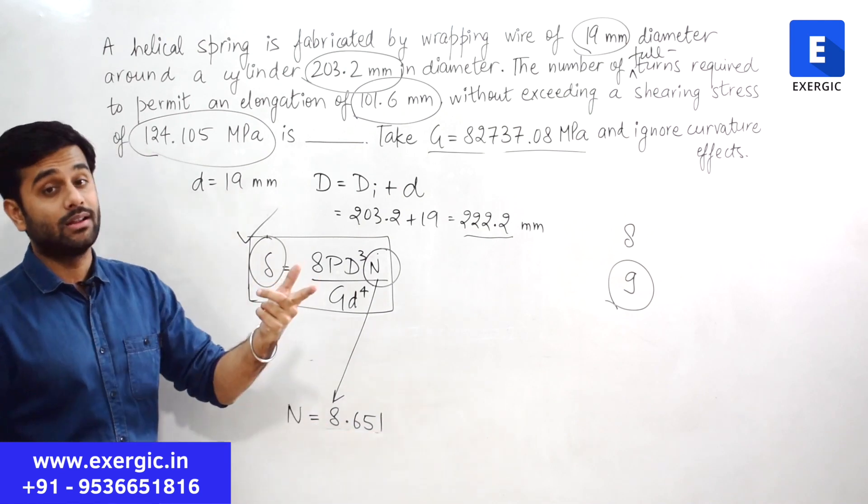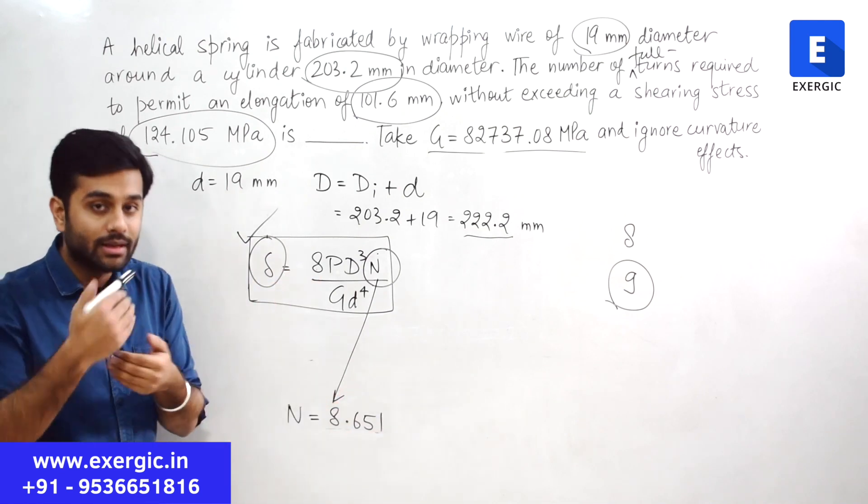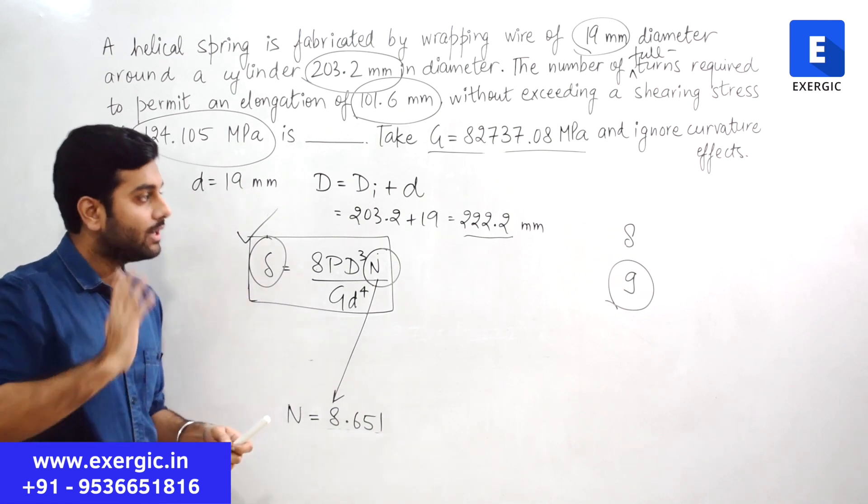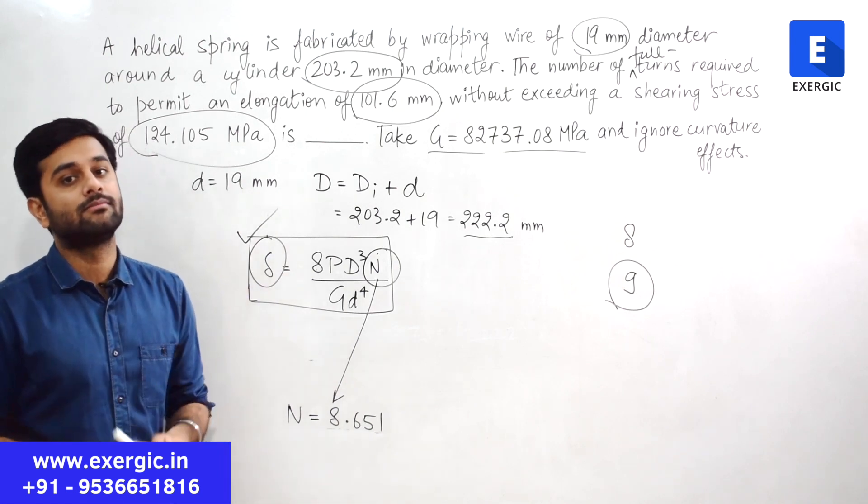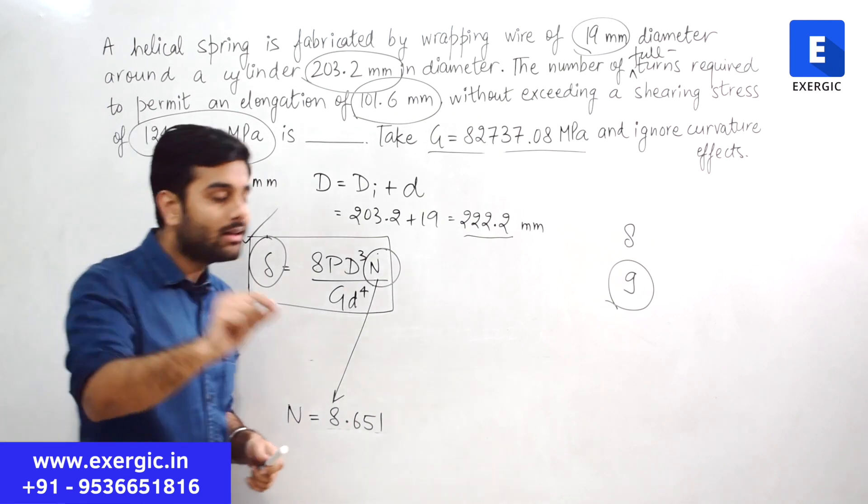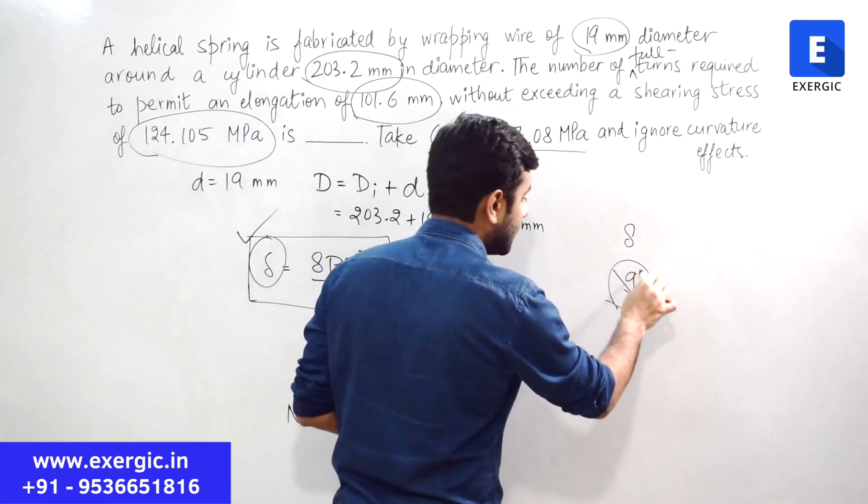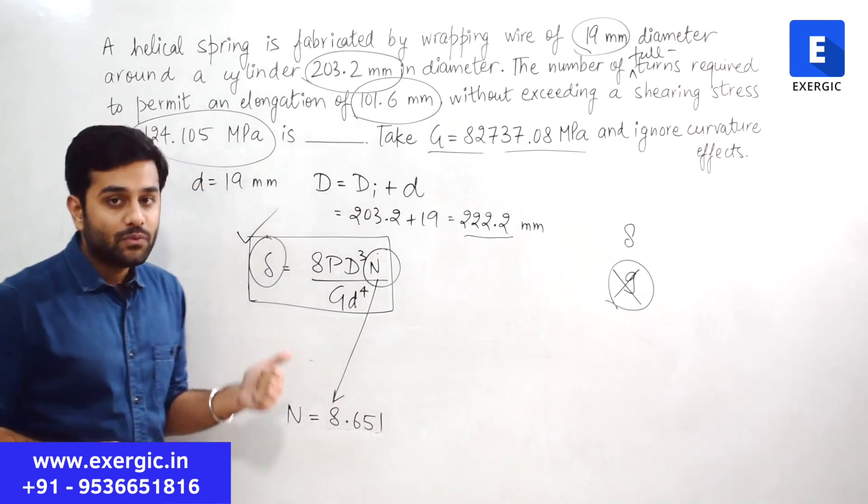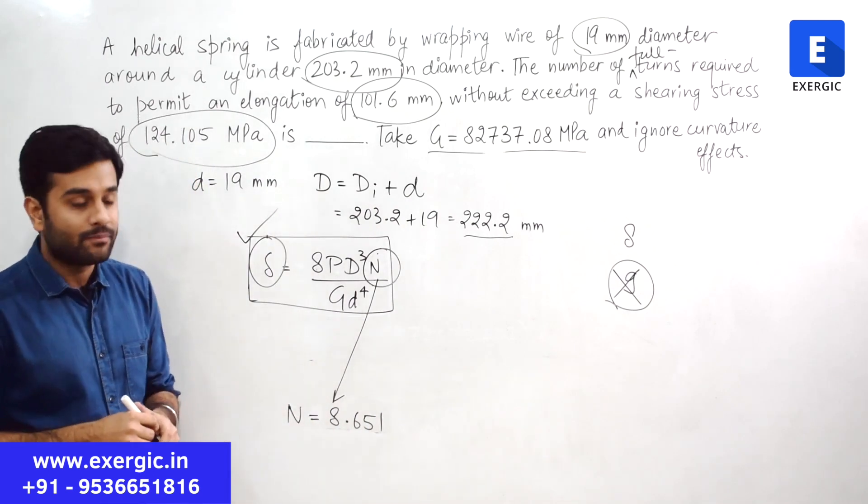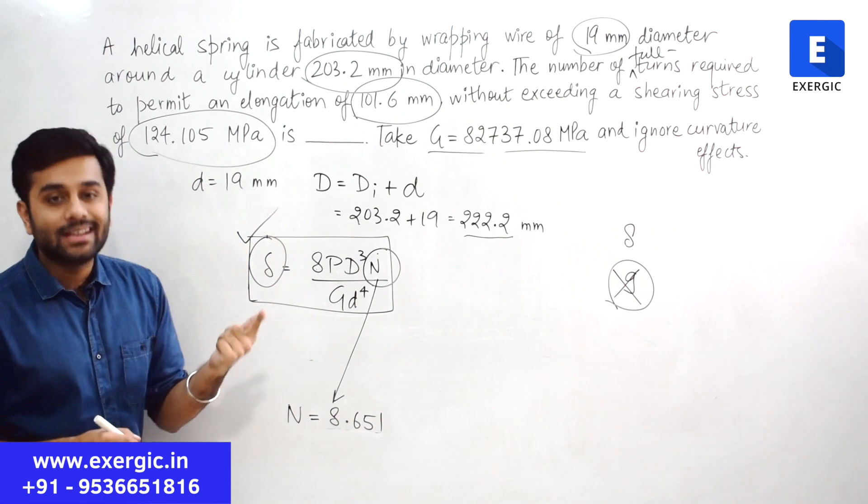We see this value and we say that no, it has to be converted because the number of turns cannot be in decimal. Let us convert it into 9. We will require at least 9. That funda is incorrect here. You cannot apply that here because if you increase the value of N, in this case, the del value will also increase.